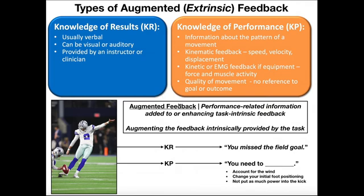We could also define augmented feedback as augmenting the feedback intrinsically provided by the task. For our motor task in this example, we're going to consider kicking a field goal. I'm sorry to any Dallas Cowboys fans, but the kickers for the Dallas Cowboys can't make a field goal to save their life. They can hit bombs from 60 yards out, but put them 10 yards in front of the field goal line and they kick it at 45 degrees. But anyways, let's suppose this guy's going up to kick a field goal and he does miss. We have two types of augmented feedback: knowledge of results and knowledge of performance.